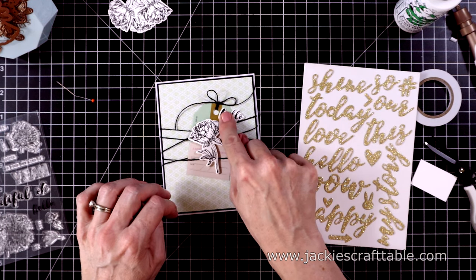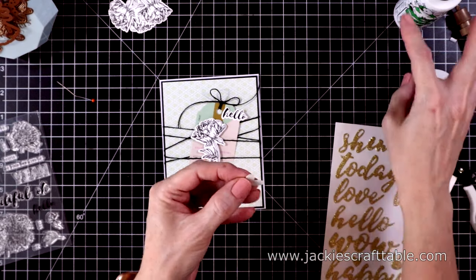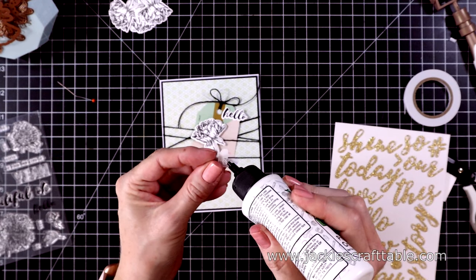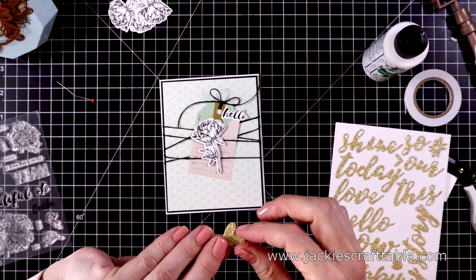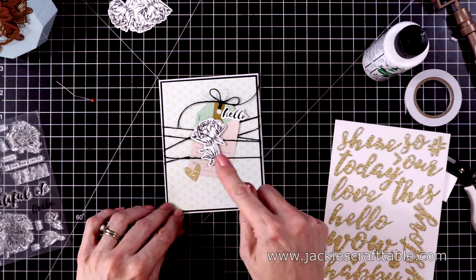Next, I'm going to use the little heart from this sticker pack to put down at the bottom of the tag. I'm going to add a little bit of glue behind it just in case. But I like the little touches of gold on this card, on the tag and this heart.